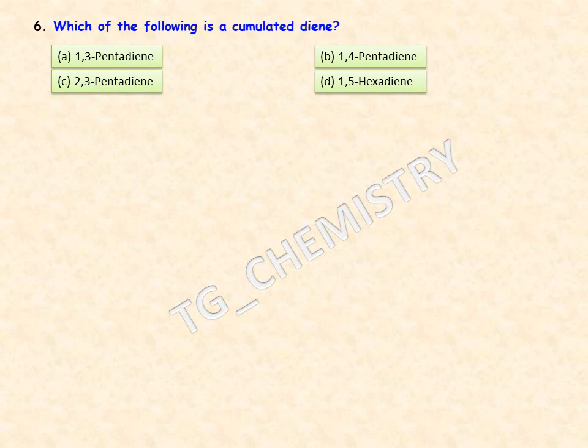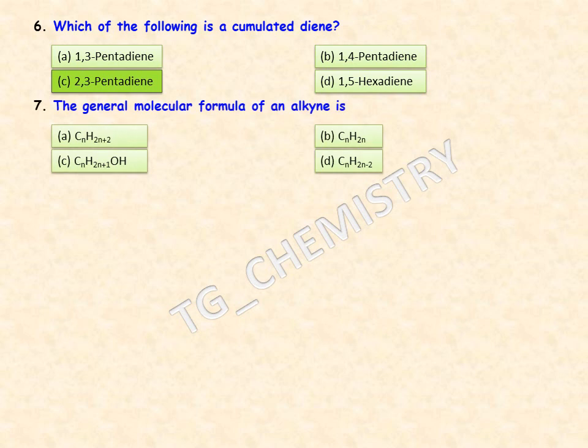The next question: which of the following is a cumulated diene? A cumulated diene is one where one carbon atom is associated with consecutive double bonds. Looking at the options — 1,3-pentadiene, 1,4-pentadiene, 2,3-pentadiene, and 1,5-hexadiene — the correct answer is 2,3-pentadiene (option C), where one carbon is attached to two double bonds.